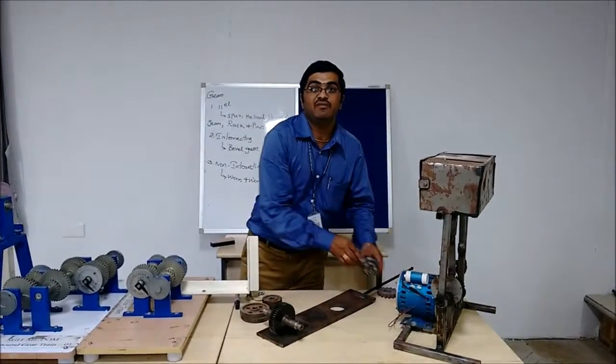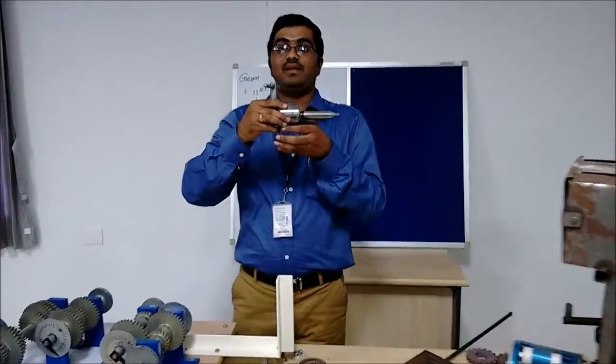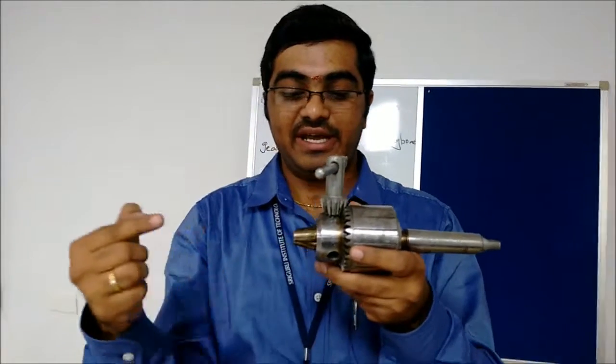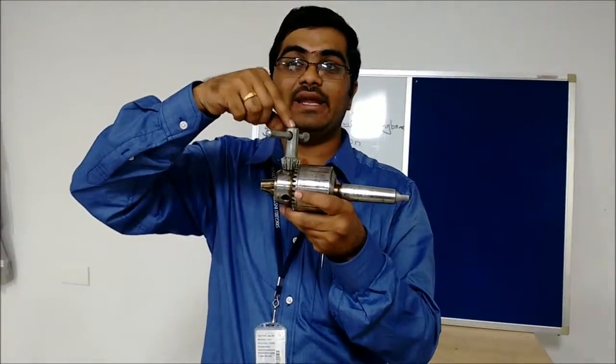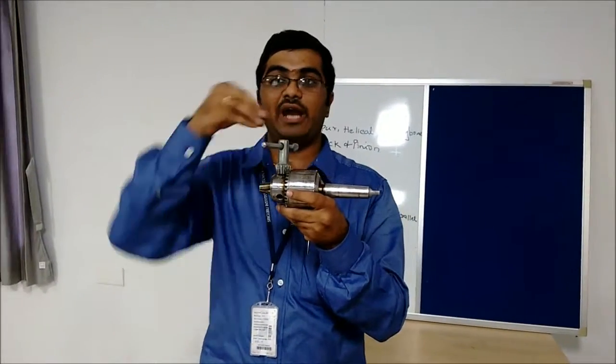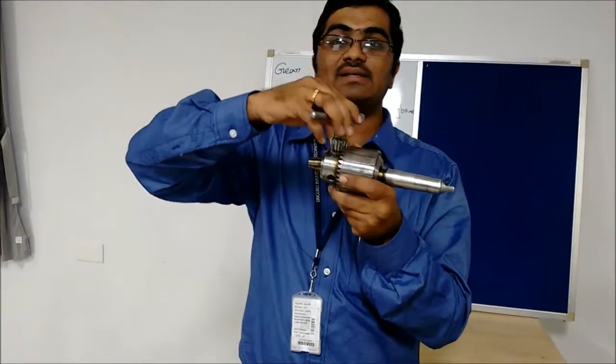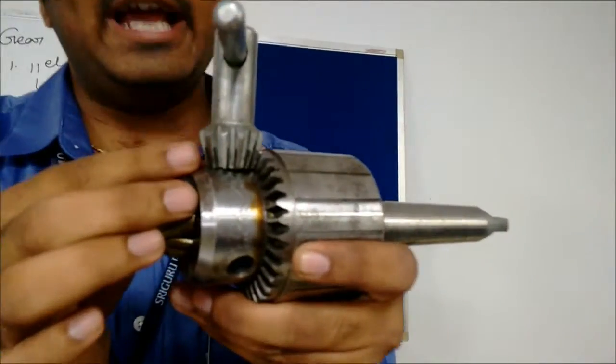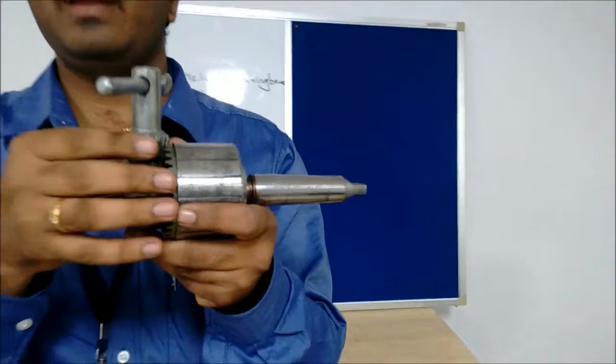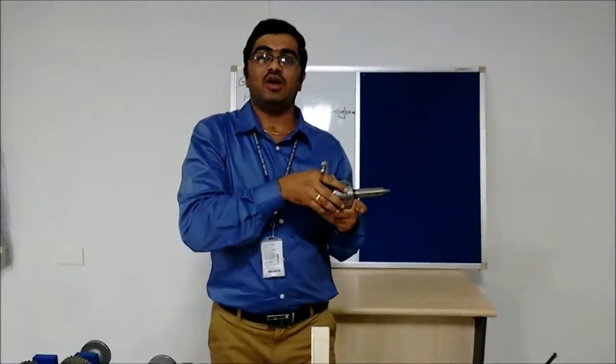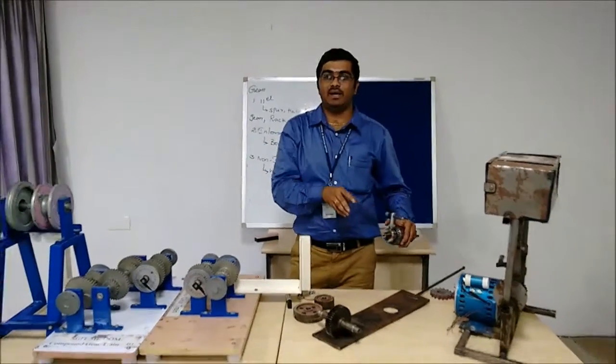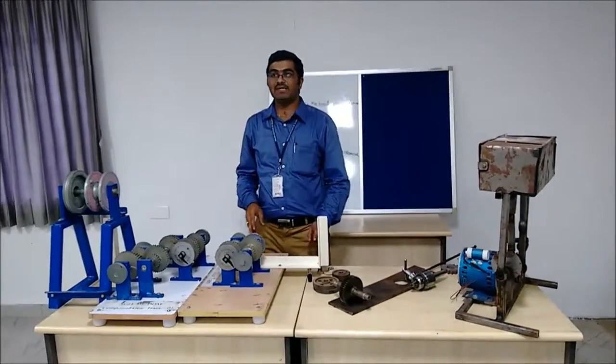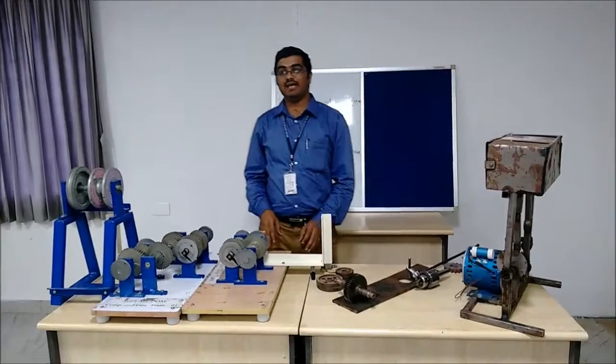Bevel gears. The bevel gears are useful when the direction of the shaft needs to be changed. Here it is at 0 degrees, it is at 90 degrees. When you want to transmit from 0 degrees to 90 degrees or at an angle, we use bevel gears. The teeth on the bevel gears can be straight or spiral or hypoid. It is used in various applications like locomotives, marine engines, automobiles, printing presses, cooling towers, power plants, steel plants, and railway track inspection machines.